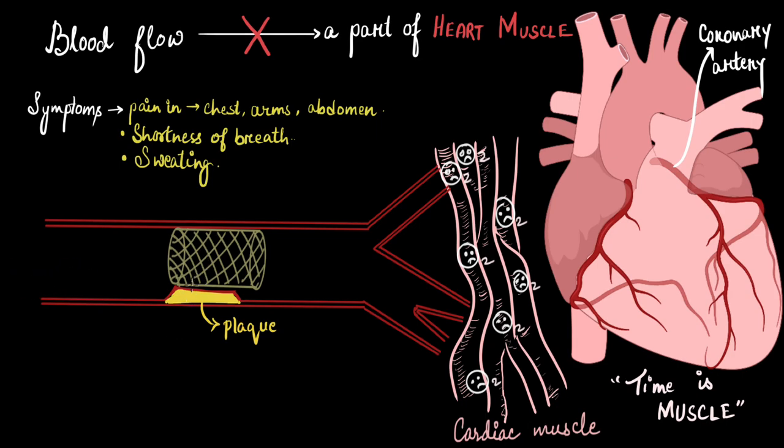And sometimes the alternate option is a bypass surgery. For example let's say here is the blockage. In that case the doctor will extract arteries from other part of the body and will attach it in such a way that the blood could bypass the blockage and still reach the heart muscles.